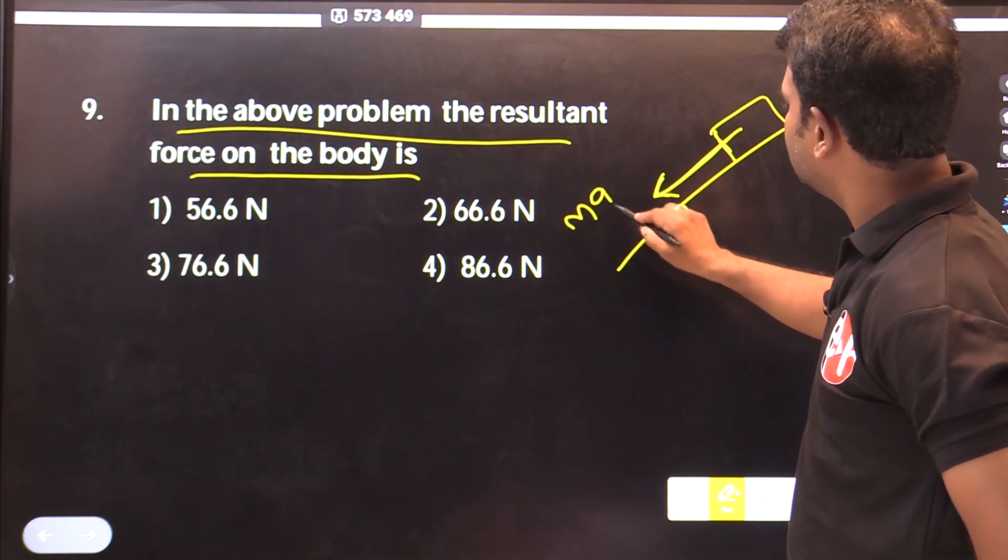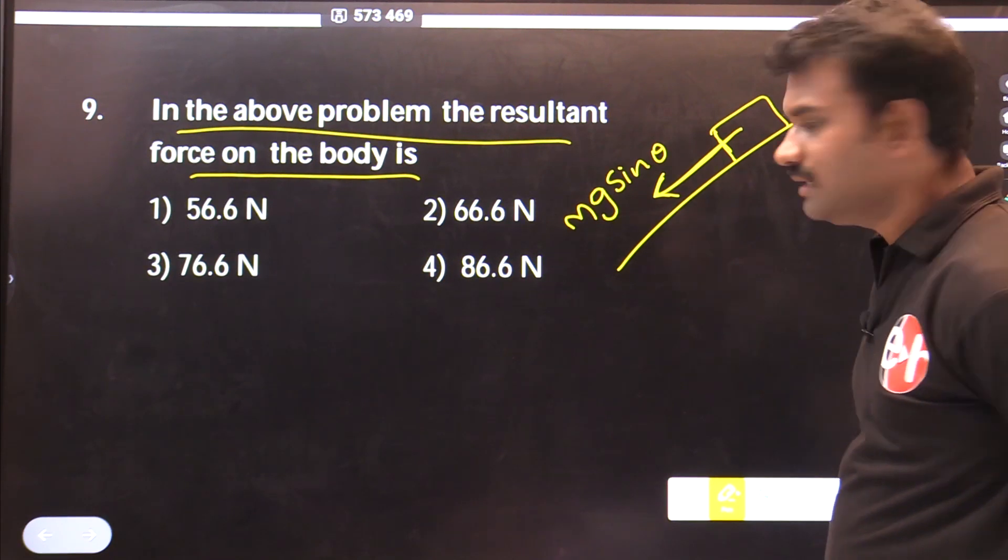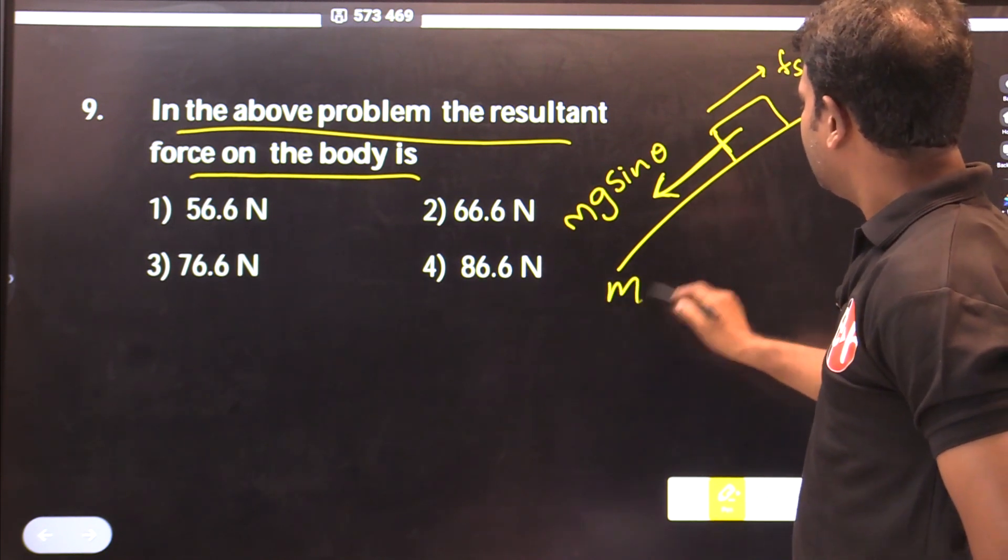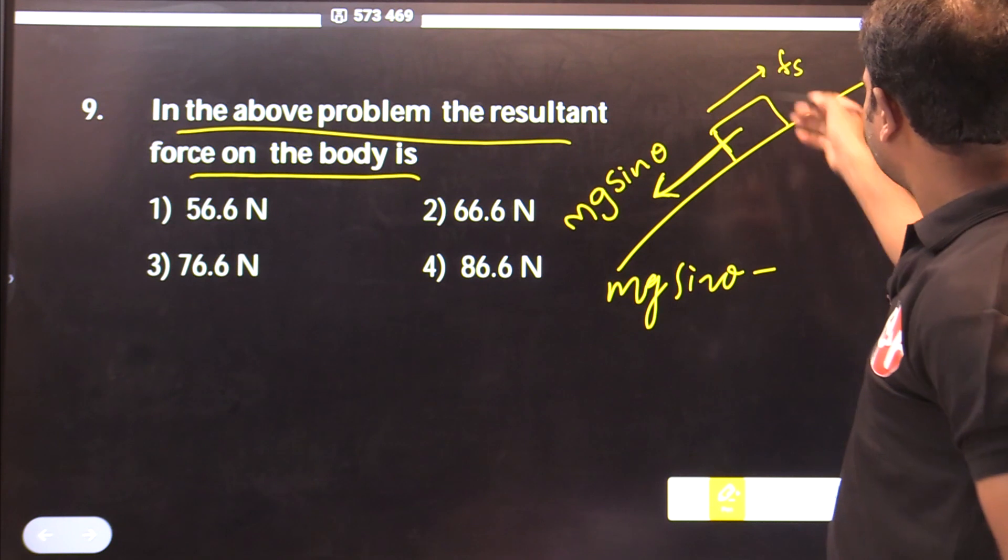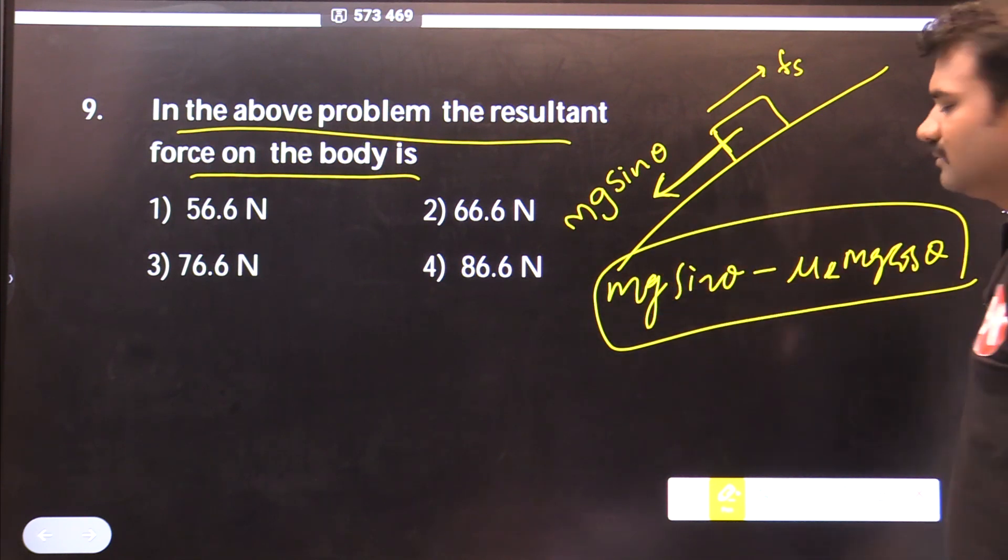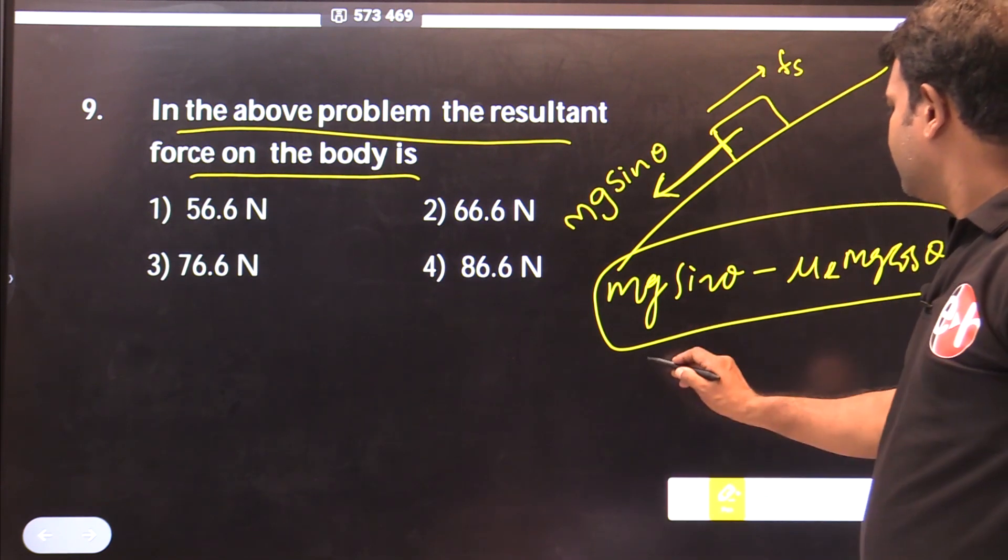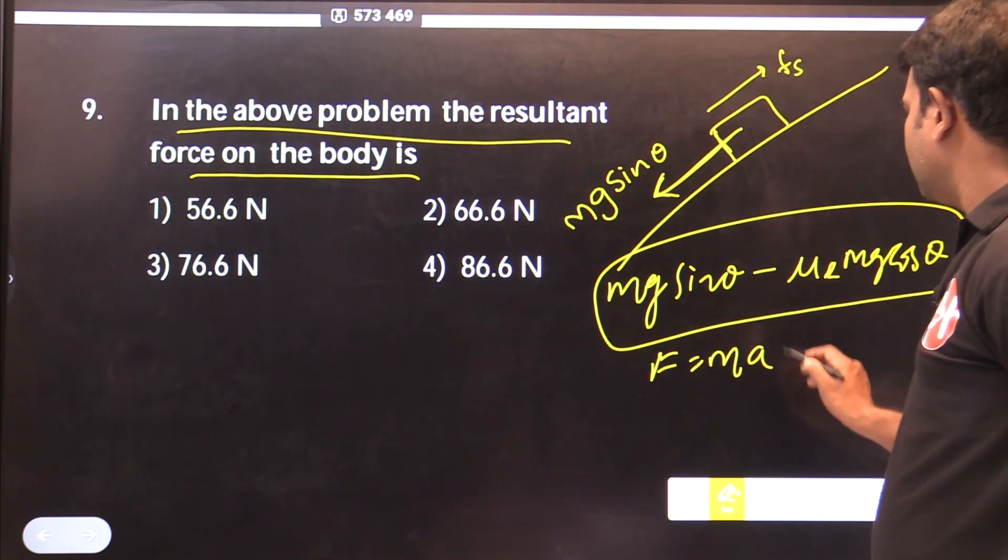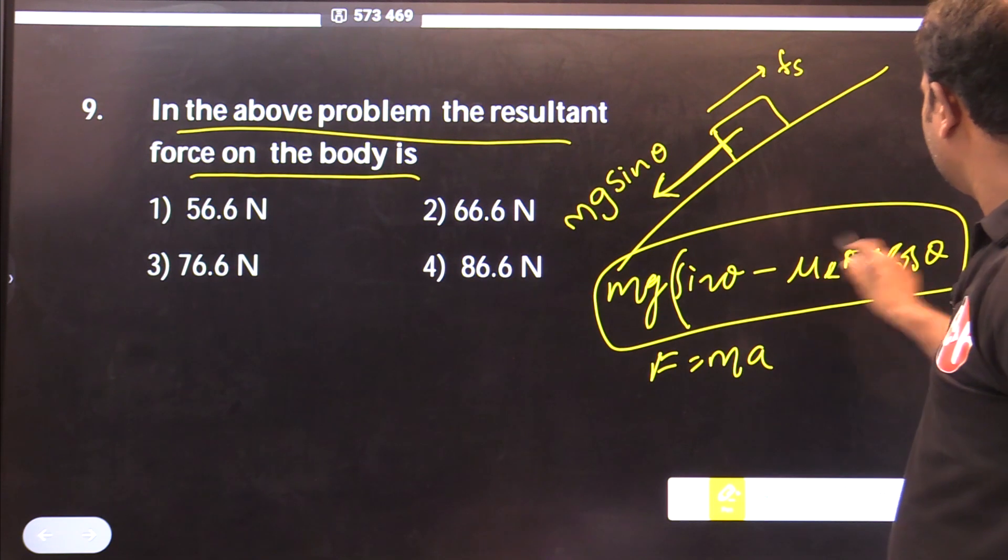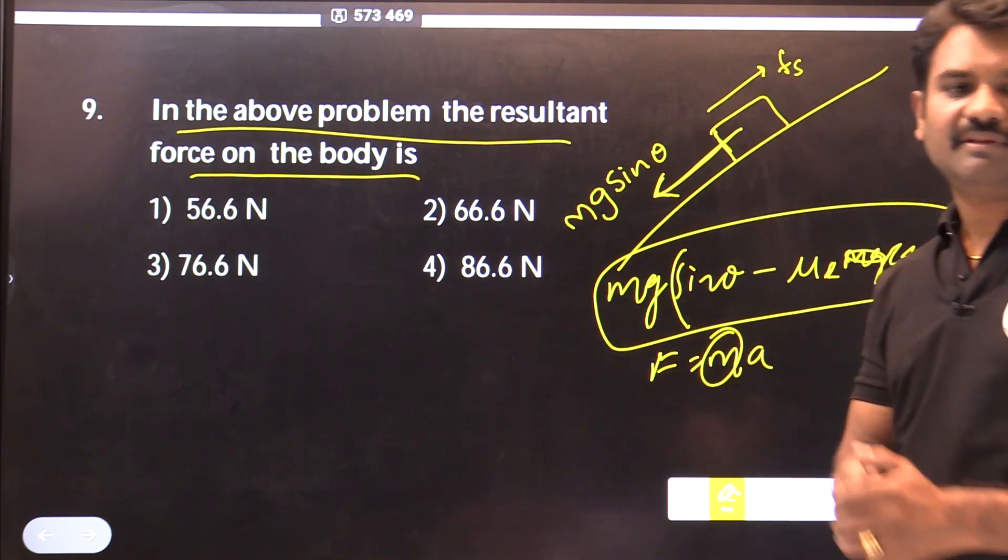Mg sin theta minus friction force mu k into mg cos theta. The resultant force equals m into a. So mg cancels out, leaving acceleration. If you multiply with m you will get the answer.